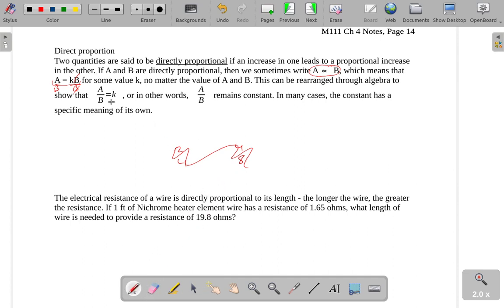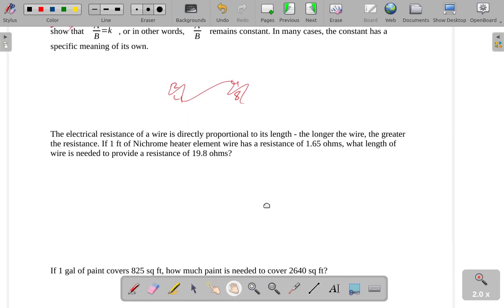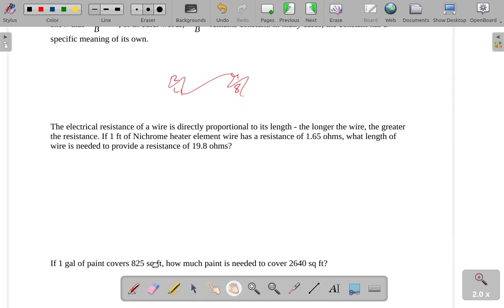So in any case, this would allow us to find out the value of k. This is our constant, or the constant of proportionality is sometimes what it's called. All right, so in this first example, it says electrical resistance of a wire is directly proportional to its length.